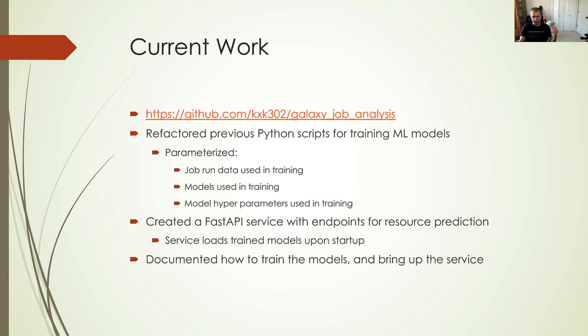Also, we're going to be training different models on data. The list of models is also specified in a separate file. Furthermore, these models have parameters and the ideal value for those parameters is not known. So we need to train a model for a range of parameters and see which one performs the best. That's hyperparameter tuning and we can specify the hyperparameters in the input file and the script would do a grid search on all combination of all parameters and find the best model. After the model is created, we're going to use those models. I created a fast API service with endpoints for resource prediction.